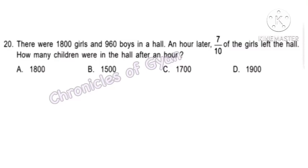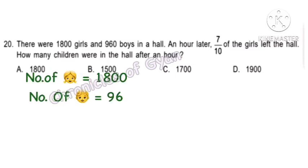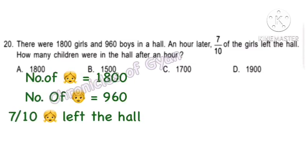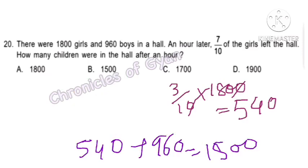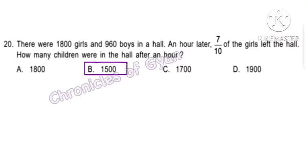Question 20. There were 1,800 girls and 960 boys in a hall. An hour later, 7/10 of the girls left the hall. How many children remained? 3/10 of 1,800 girls remained, which is 540. Adding 960 boys gives option B — 1,500 children in the hall.